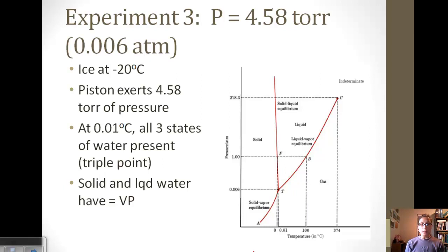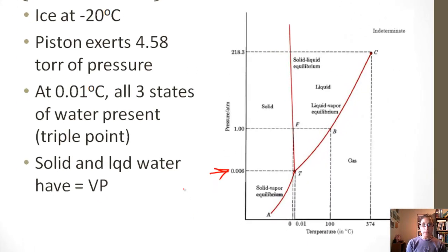Now let's increase our pressure a little bit to 0.006 atmospheres or 4.58 torr. We still have ice at negative 20, and now we're going to increase the pressure to 4.58 torr. At 0.01 degrees Celsius, which you can see is right here on our graph, at this pressure and our 0.01 degrees Celsius temperature, we have what's called the triple point.